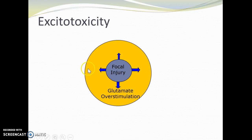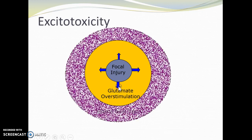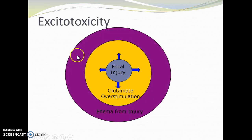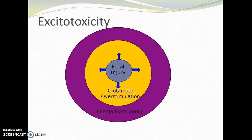We get this area of overstimulation. We know that glutamate is an excitatory neurotransmitter — this is where we get the name excitotoxicity. These neurons literally get excited to death. They have so much glutamate that they get so excited that they die. When these overstimulated neurons die as well, the extra glutamate gets released from them.